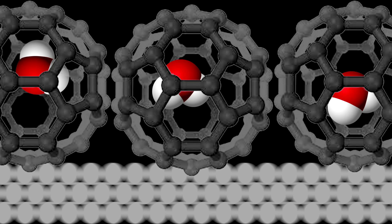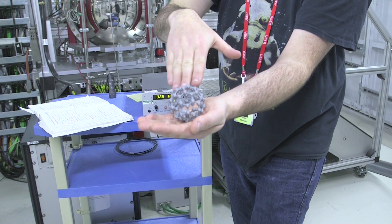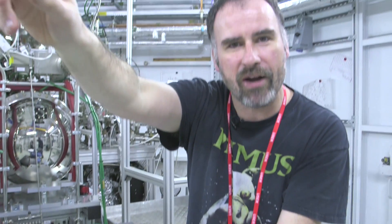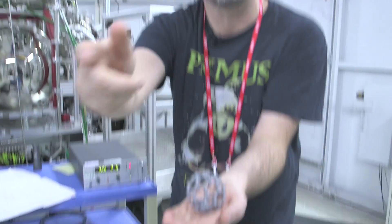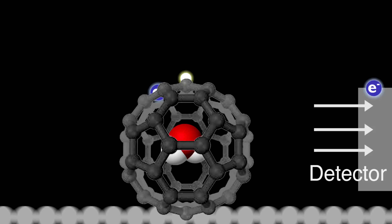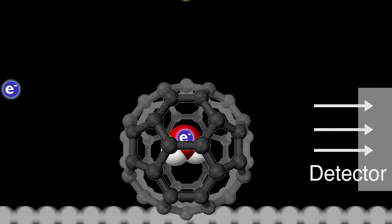Then we take our beam of photons, they come in, and we look at the electrons given out by the water. We are also interested in the cage itself, so we also look at the electrons coming out from the carbon. That is the first stage of the experiment. But in parallel, and a real advantage of this particular beamline, is a technique called X-ray standing wave analysis.